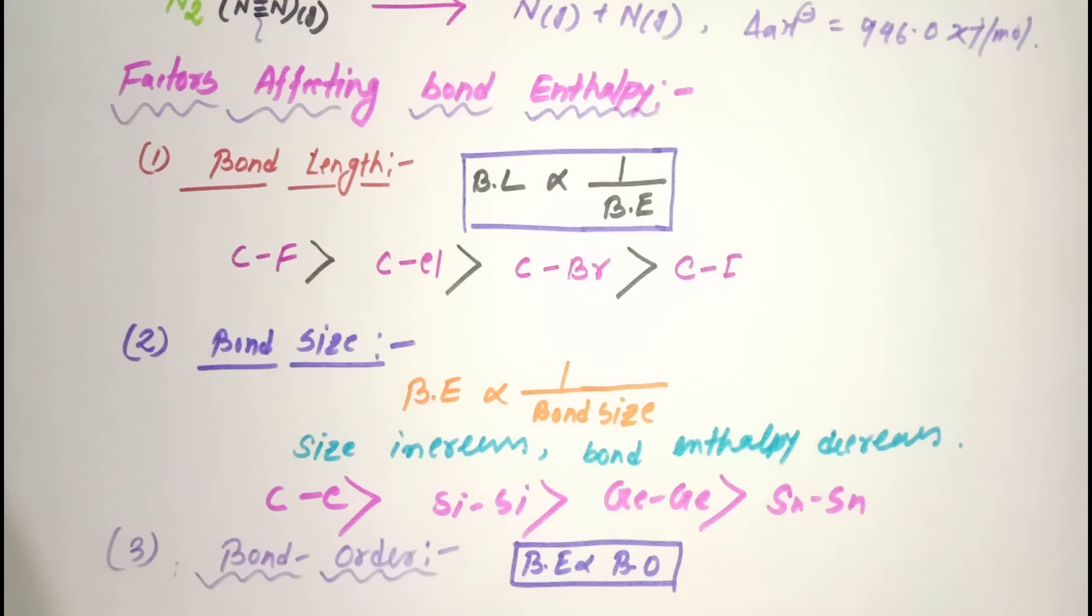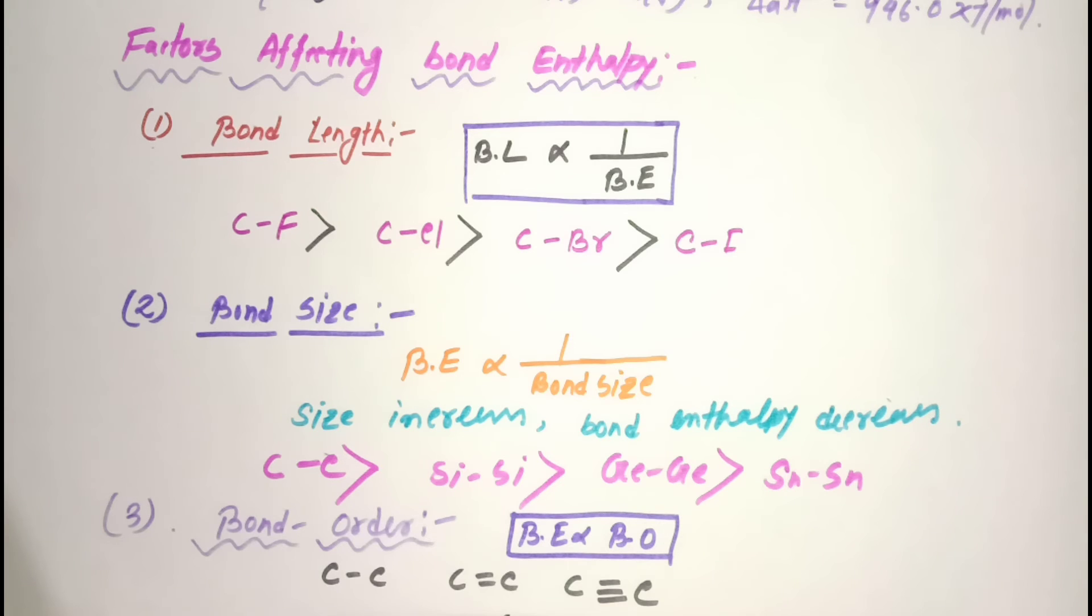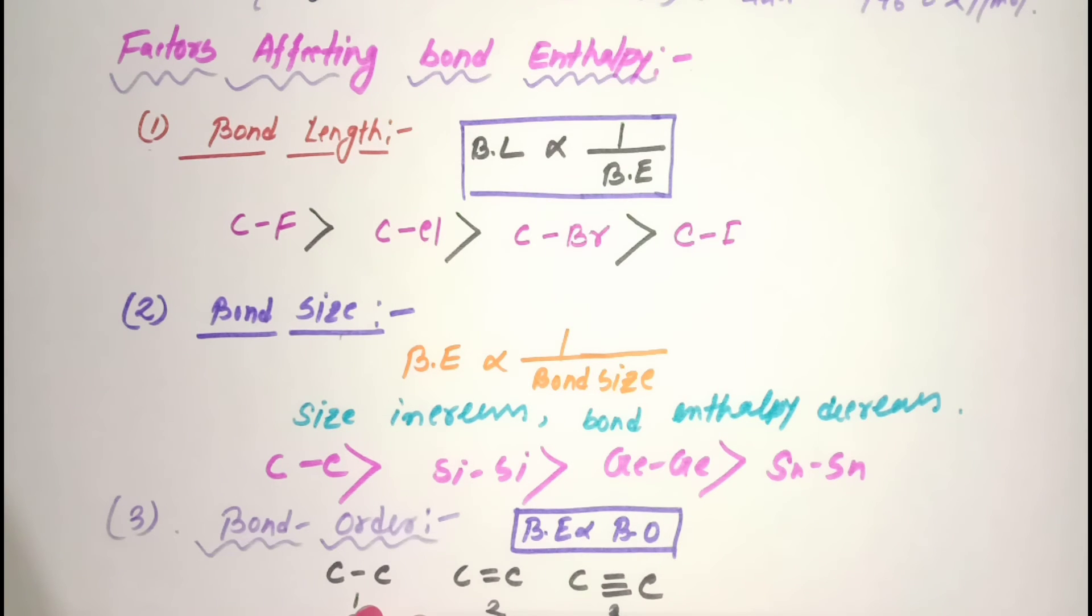Bond order basically indicates the strength of a bond in a molecule. For example, if we have one single bond the bond order is 1, for double bond the bond order is 2, and for triple bond the bond order is 3.